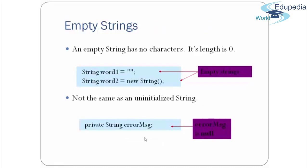An empty string has no characters and its length is 0. For example, String word = "" or String word2 = new String() are both empty strings. These are not the same as an uninitialized string — for example, a private String errorMessage is null. There is a difference between a null string and a string with length 0.